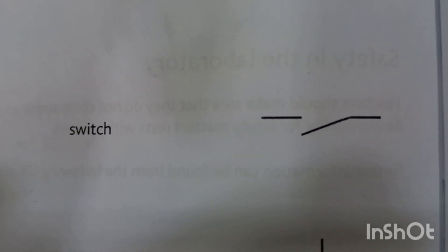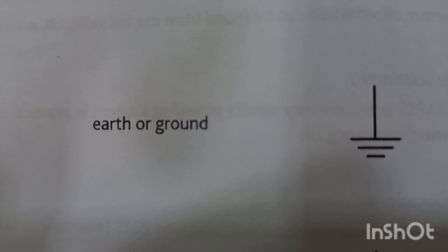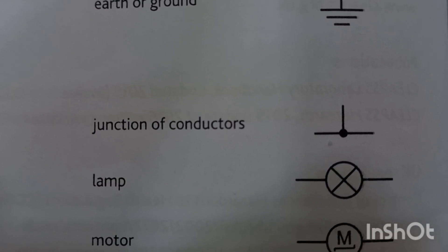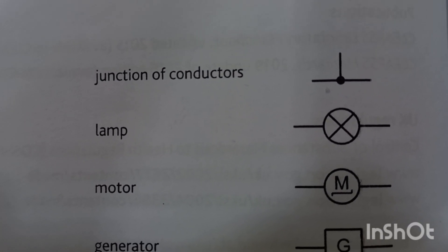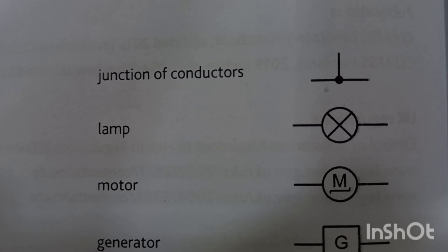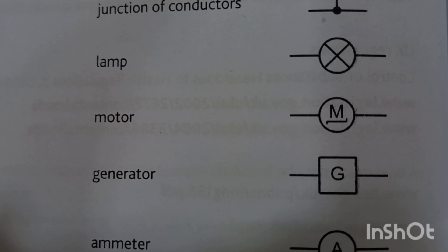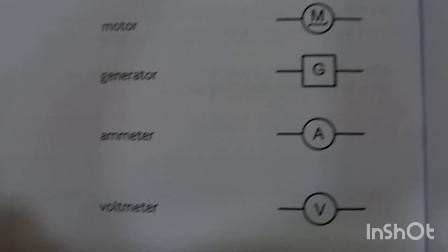This symbol represents a switch. Then we have this symbol which represents earth or ground — this is the symbol for the earth wire or ground wire. Then this symbol is for the junction of conductors, meaning two wires are electrically connected to each other. This is the symbol for the lamp in a circuit.